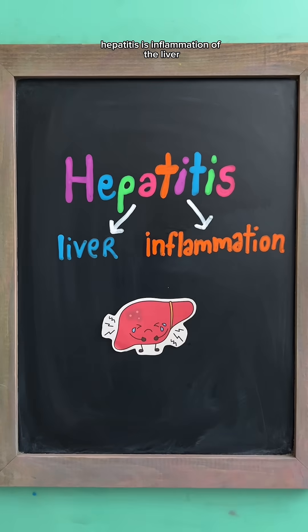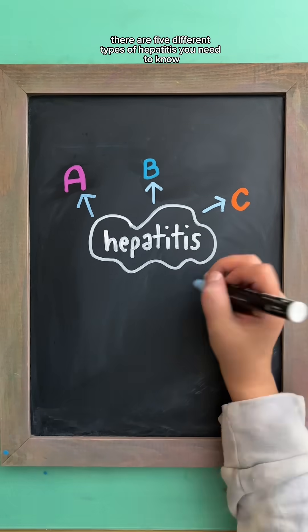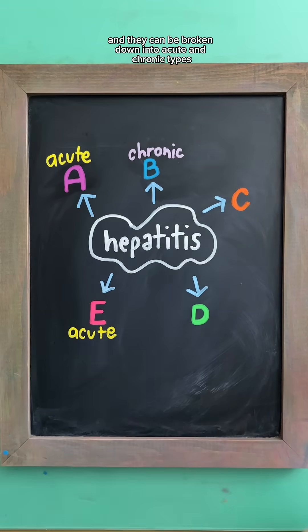Hepatitis is inflammation of the liver. There are five different types of hepatitis you need to know and they can be broken down into acute and chronic types.